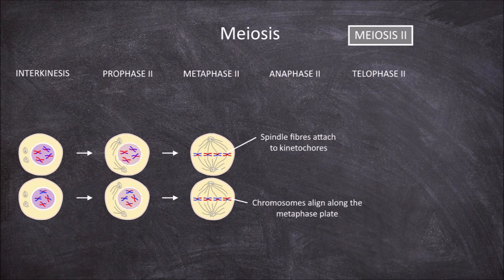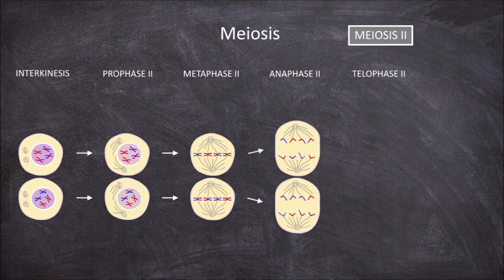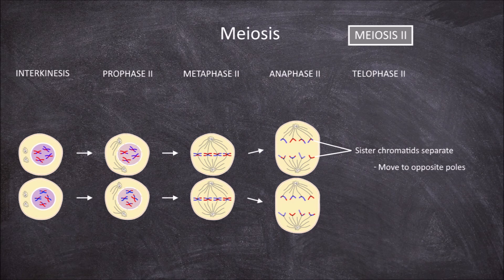The third phase of meiosis 2 is anaphase 2. During anaphase 2, the spindle fibers in both daughter cells continue to contract and cause the sister chromatids of each chromosome to separate at the centromeres. The sister chromatids then move to opposite poles of the cell.